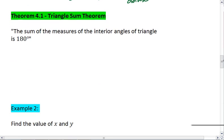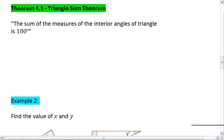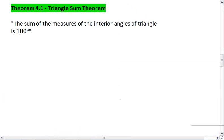So, this brings us to theorem 4.1, and we've kind of been using this all along. It's probably something you've seen prior to starting geometry. And what this theorem tells us is that the sum of the measure of the interior angles of a triangle is 180 degrees.